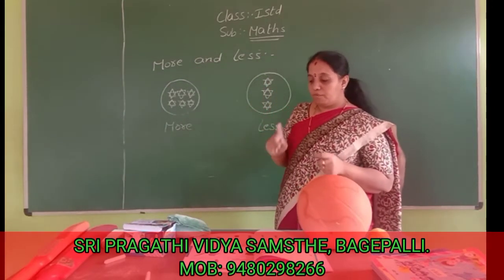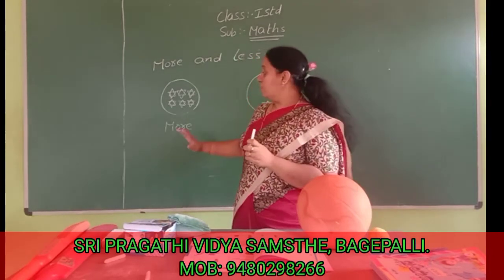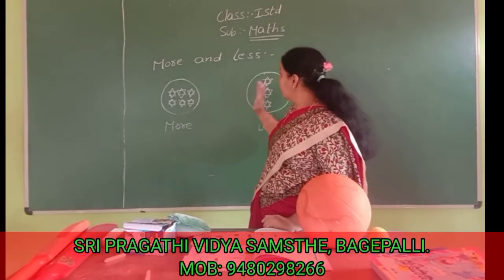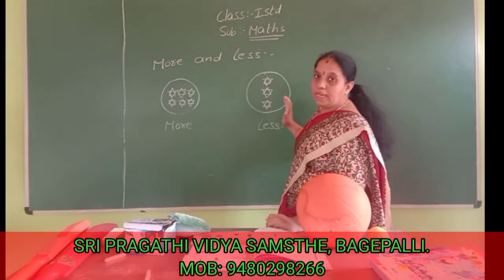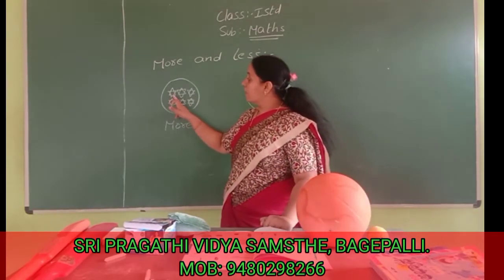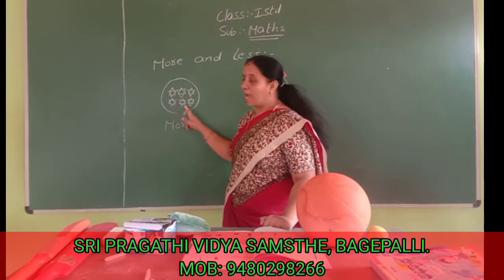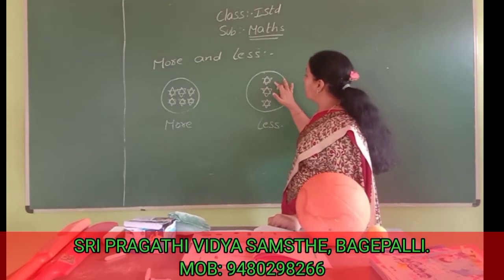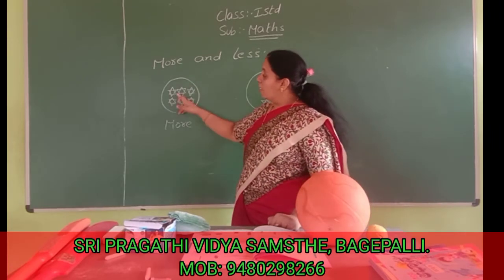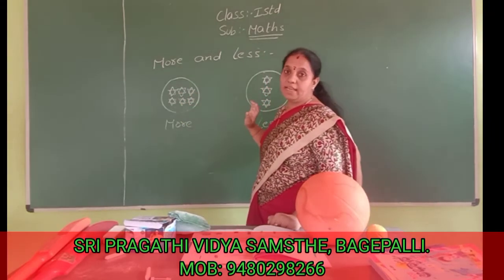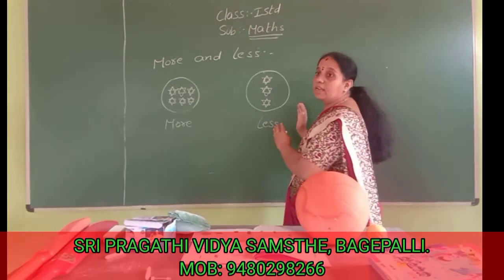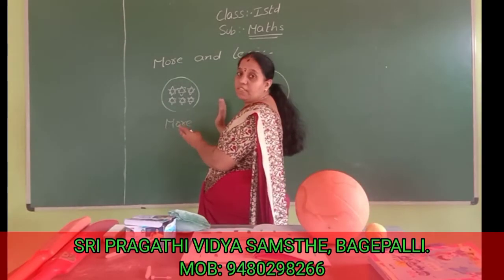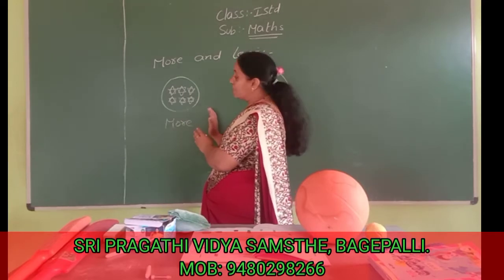When we have more than one item there, we will say more. See here — more means here: one, two, three. Here, some items only. See here, how many items are there? One, two, three, four, five, six — six items are there. Here how many items are there? Only three. That's why when things are few, we will say less. When we have more things, we will say more.